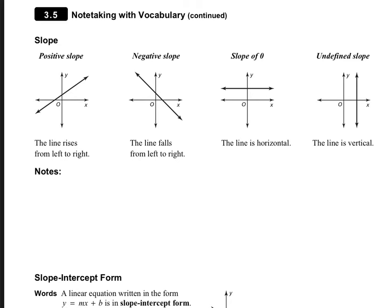On page 82, a positive slope rises up from left to right — think about money in a bank growing. A negative slope is when the line falls from left to right, like your money decreasing. A slope of zero is when the line is horizontal, and an undefined slope is when the line is vertical.